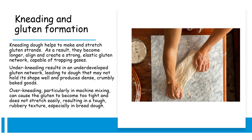Kneading dough helps to make and stretch gluten strands. As a result, they become longer, align, and create a strong elastic gluten network capable of trapping gases. Under-kneading results in an underdeveloped gluten network, leading to dough that may not hold its shape well and produces dense, crumbly baked goods.